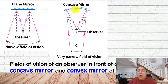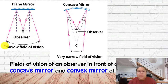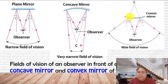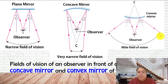For the concave mirror, there is still a very narrow field of vision compared to the plane mirror, but one advantage is it can focus the image - you can see the image become very large and clear. For the convex mirror, it gives a wider field of vision, so a bigger area you can see, but the disadvantage is the image is very small.